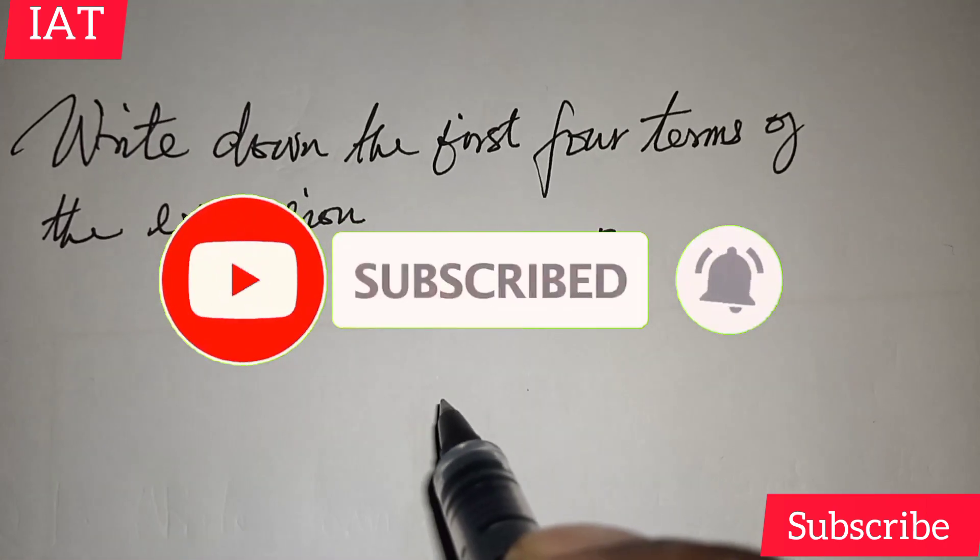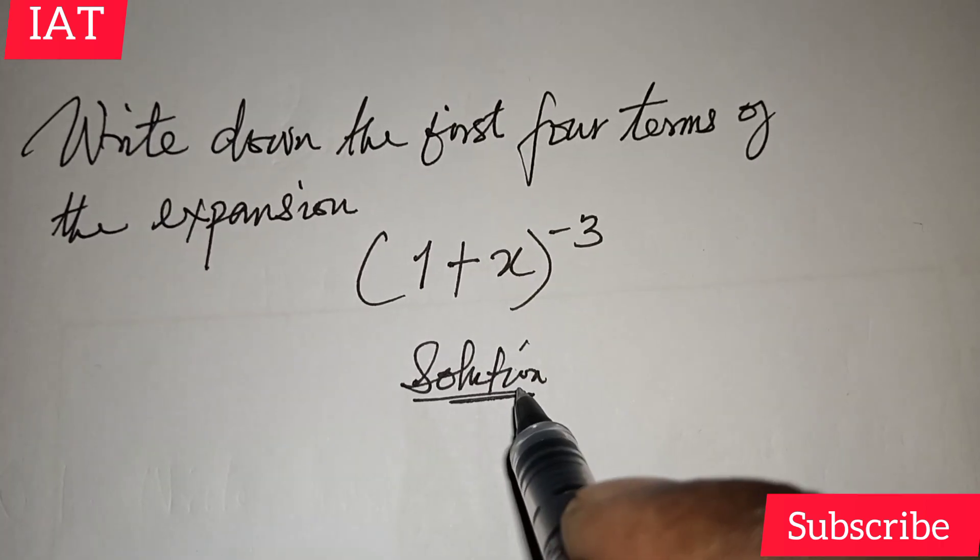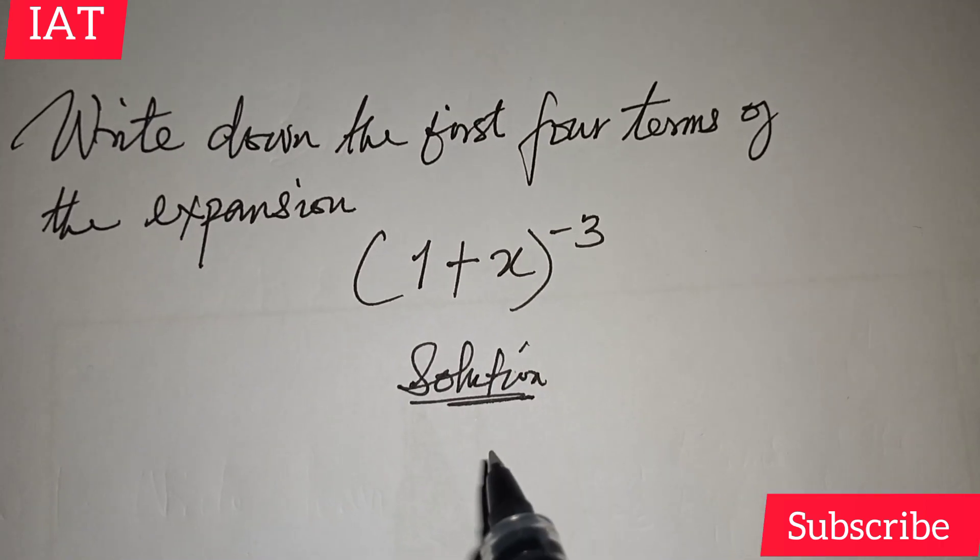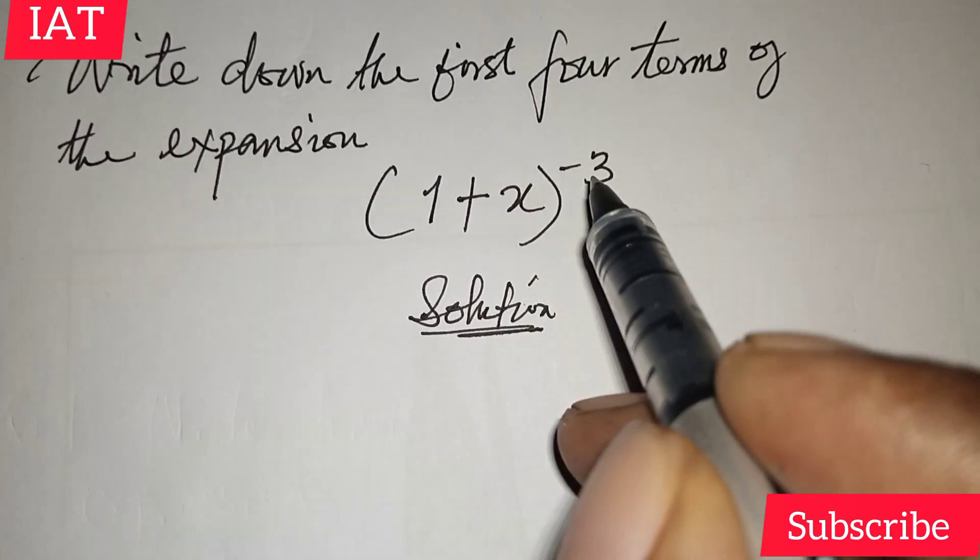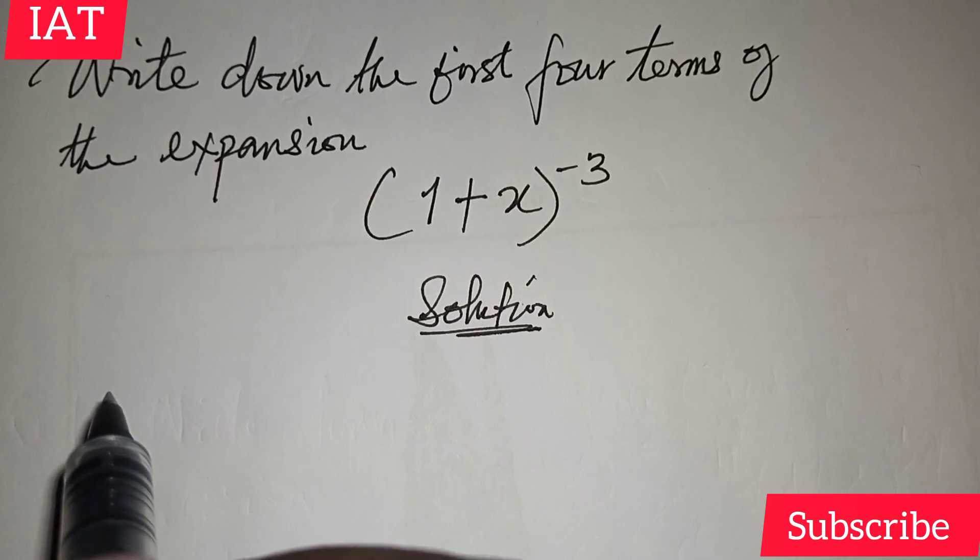So let's solve this problem quickly. We have to write down the first four terms of the expansion. Now having a negative sign here, we need to use the binomial theorem to solve this.